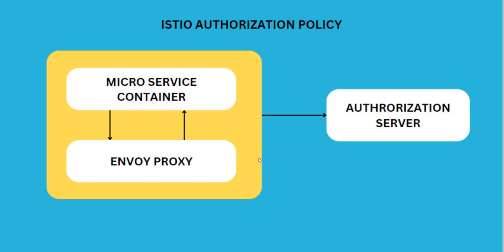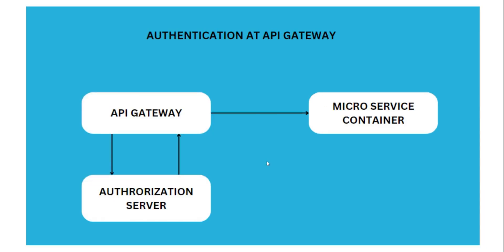Another way is where we handle authentication at the API Gateway level. The API Gateway can be anything — Netflix Zuul, Spring Cloud Gateway, Kong, or any other gateway. Authorization and authentication are handled at the gateway level, and the microservices sit behind the gateway.